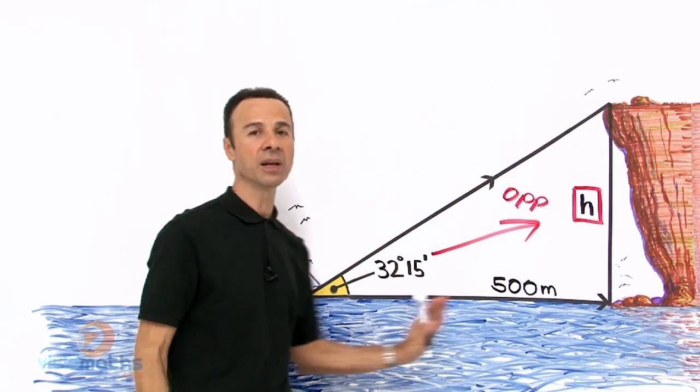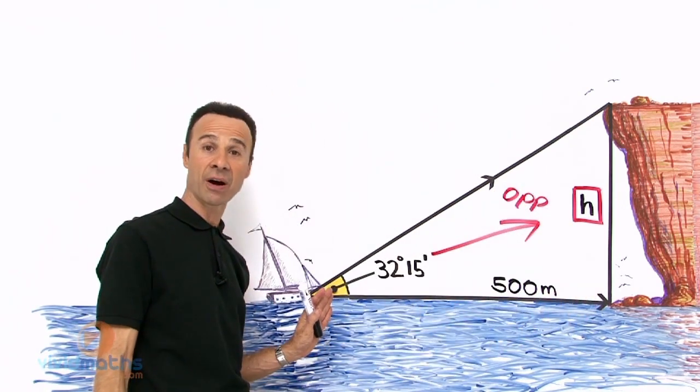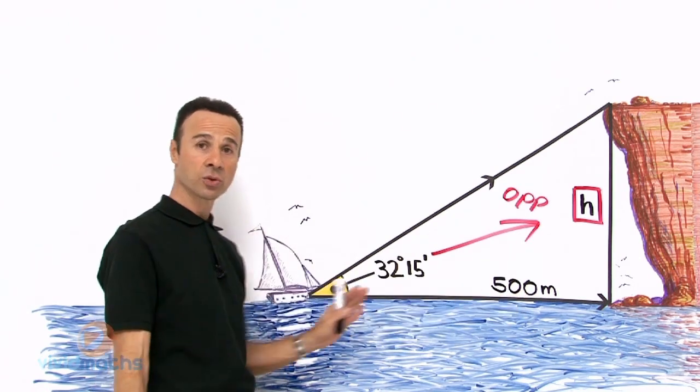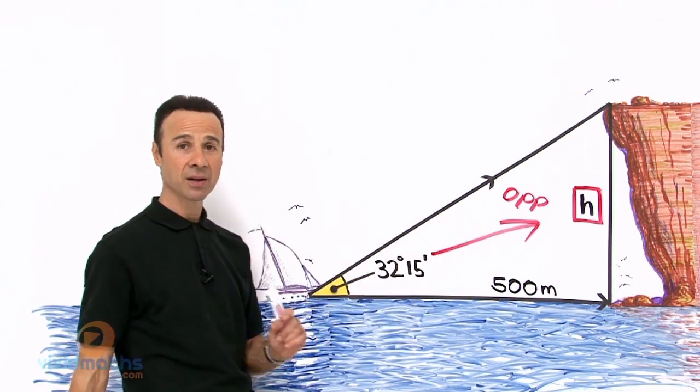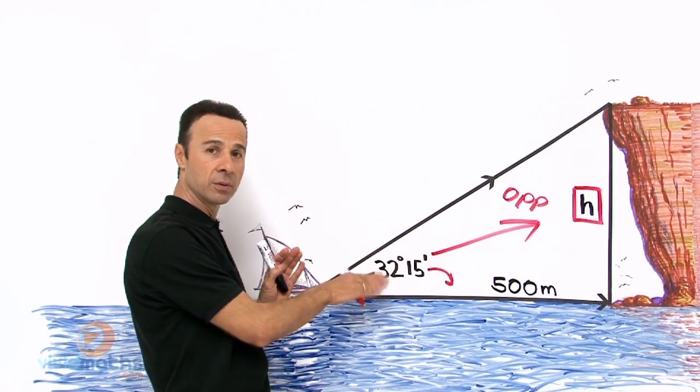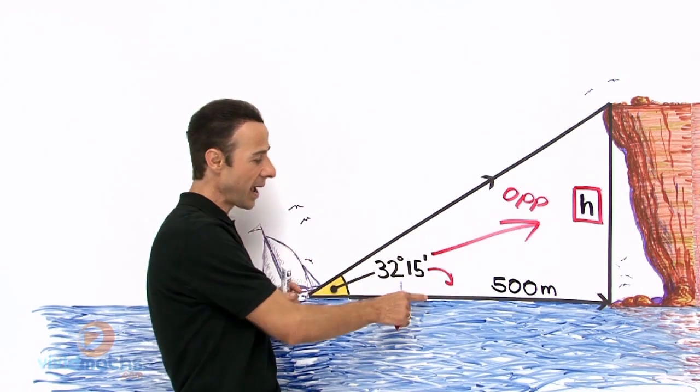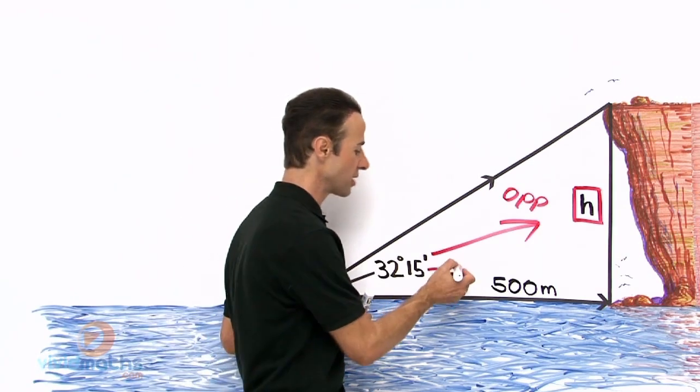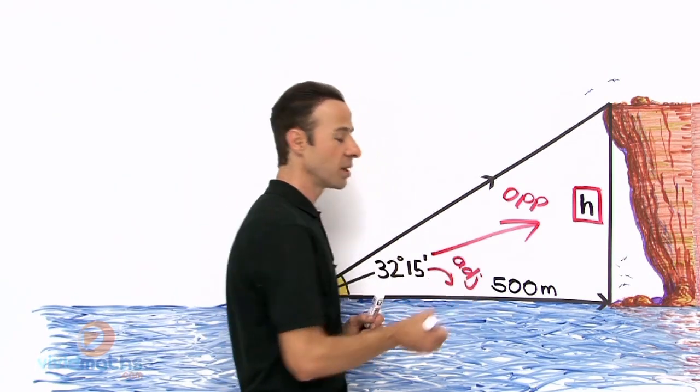And the other measurement is the 500 meters, how far out she is from the base of the cliff to the boat. And that was already measured and that happens to be to the right of the angle of elevation and it is called adjacent, which means right next to.